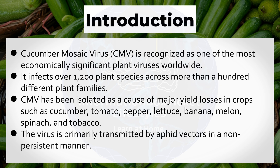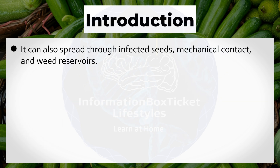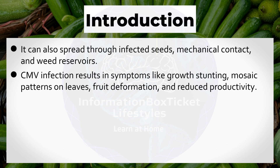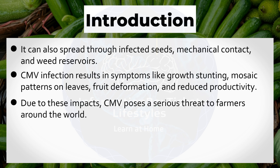The virus is primarily transmitted by aphid vectors in a non-persistent manner. It can also spread through infected seeds, mechanical contact, and weed reservoirs. Cucumber Mosaic Virus infection results in symptoms like growth stunting, mosaic patterns on leaves, fruit deformation, and reduced productivity. Due to these impacts, CMV poses a serious threat to farmers around the world.